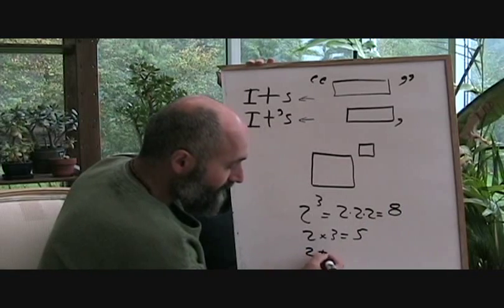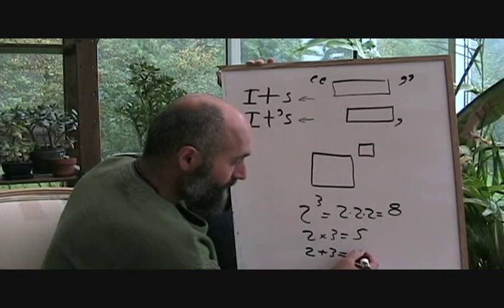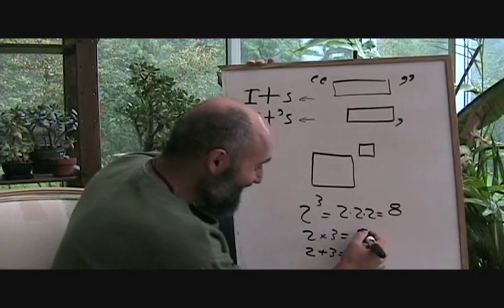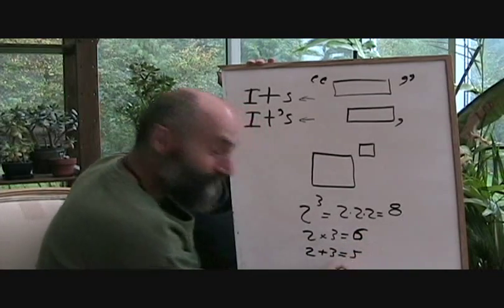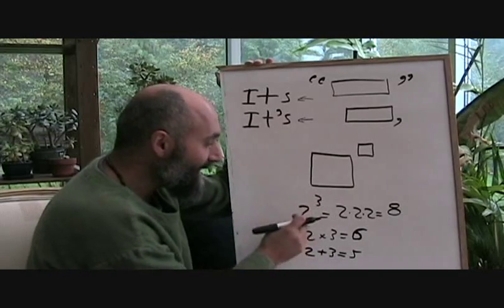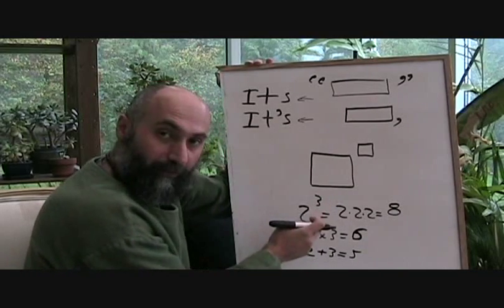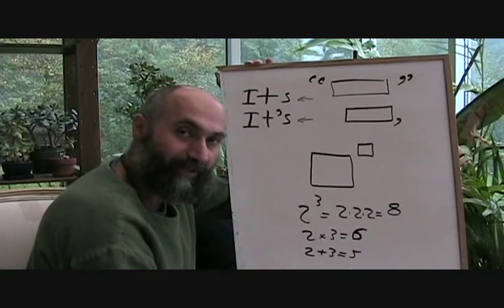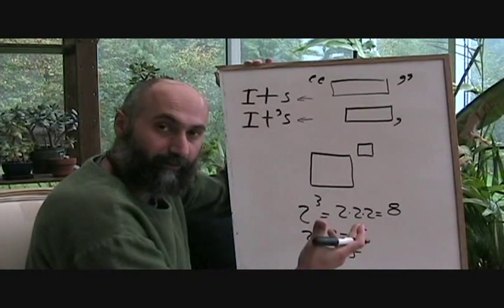Which means totally something else than two plus three, which is two times three is six, sorry. And two plus three is five, right? So depending on where you place the same two numbers and what you put between them, they have different meanings, just like any other language.